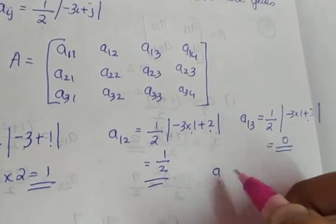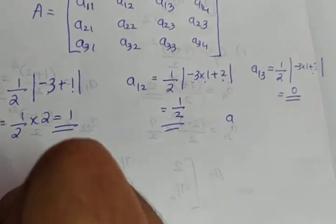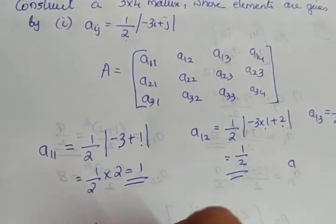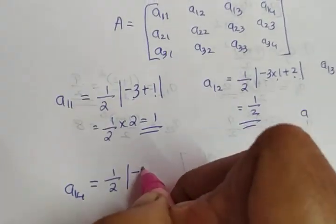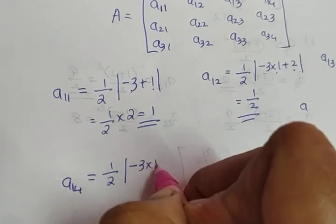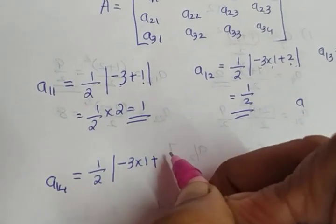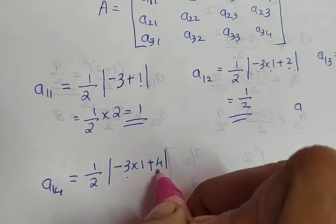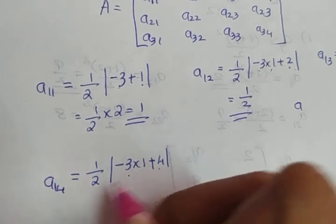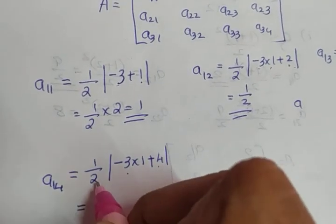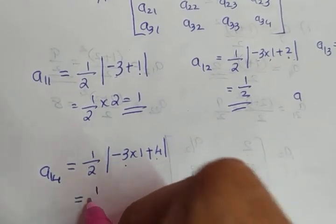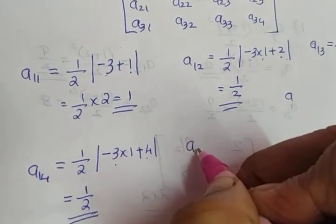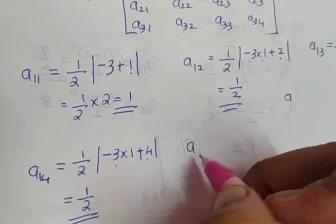A14 is equal to 1 by 2 into modulus of minus 3 into 1 plus 4. Minus 3 into 1 is minus 3 plus 4, which gives you 1. Modulus of 1 is again 1. 1 by 2 into 1 gives you 1 by 2. A14 completes the first row.